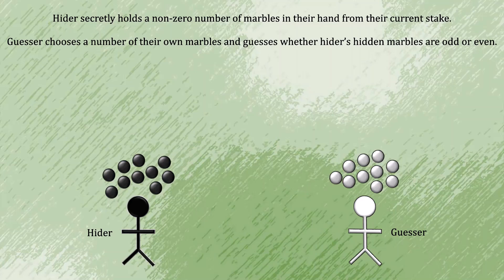After that, the guesser will choose a number of marbles of their own from their stake and guess whether the hider's hidden marbles are odd or even in number.